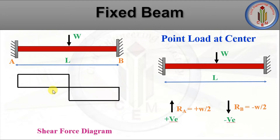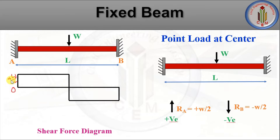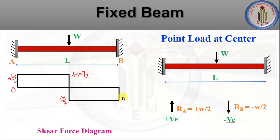The sign convention is upward positive and downward negative — we have to be very careful about this. Starting from point A, the shear force will be 0, and then it will be +W/2. When it reaches the midpoint, it is 0 again. After the midpoint, the shear force is −W/2 (negative, because downward direction), and it continues as −W/2.